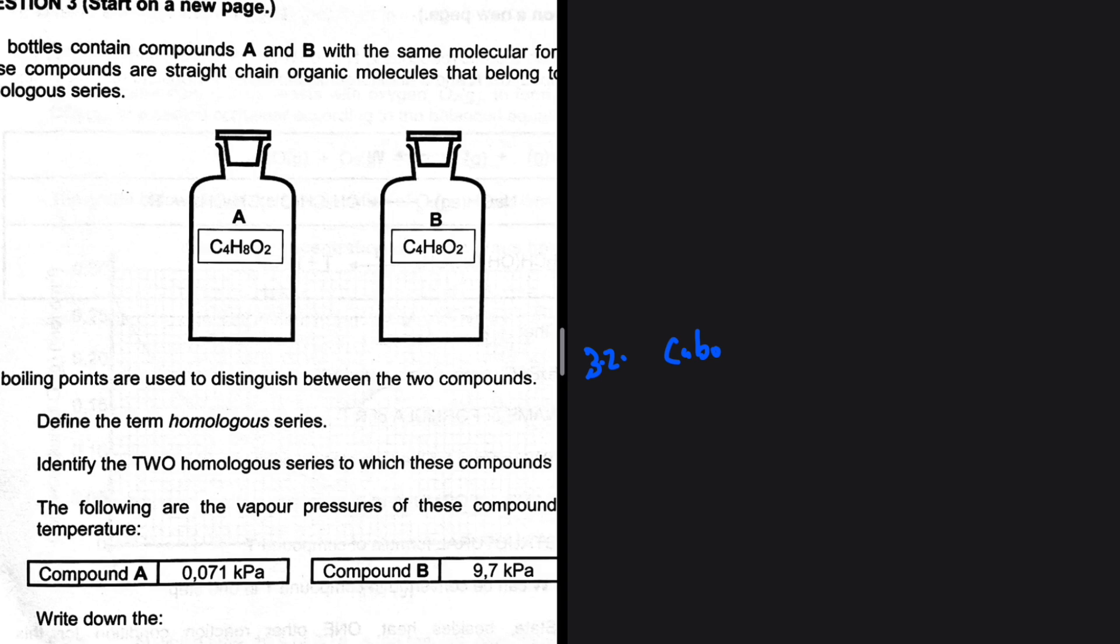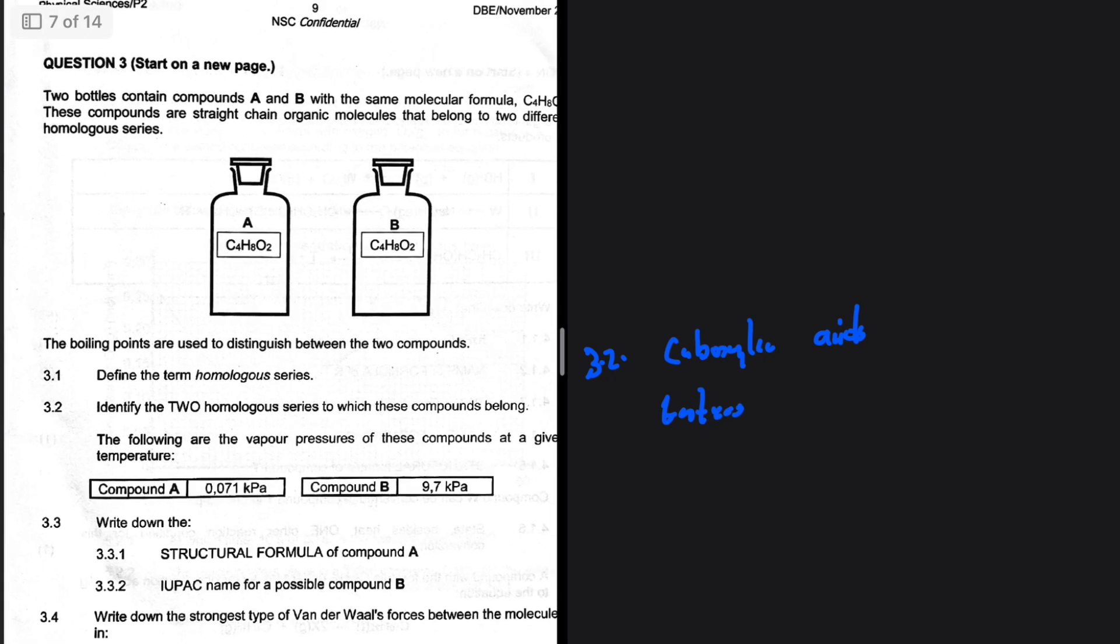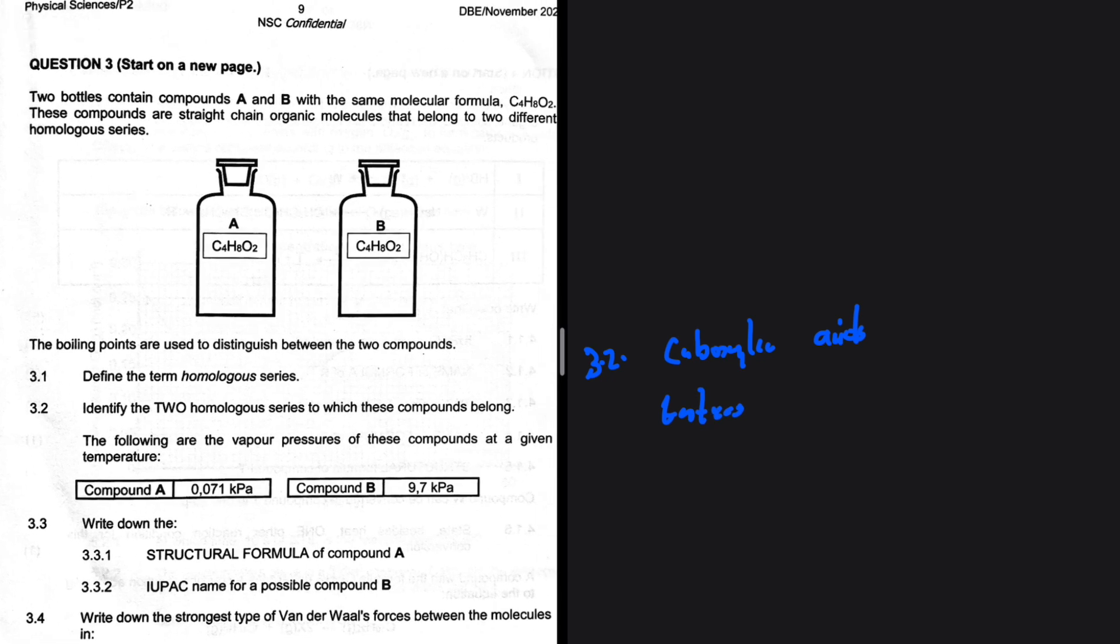Carboxylic acids and esters. So that is the answer to 3.2: identify the two homologous series to which these compounds belong - carboxylic acids and esters. At this point we don't know which is which.